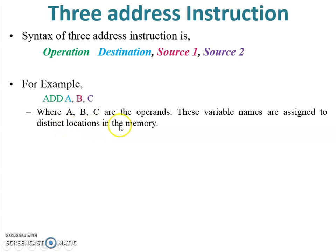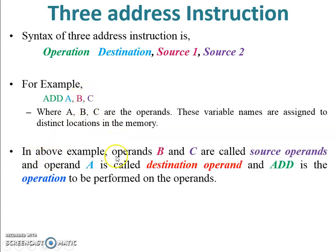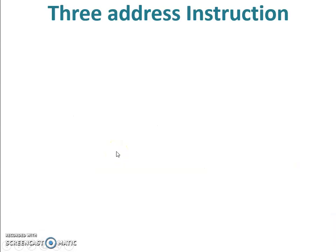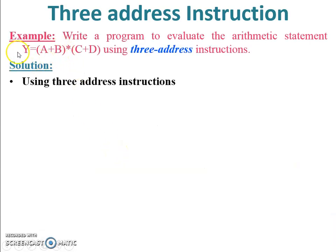A, B, and C are variable names assigned to distinct locations in the memory. Operands B and C are called source operands — data stored in B and C will be added, and the answer is stored in A. So A is called the destination address and ADD is the operation. If n bits are required to specify one memory address, then three n bits are required to specify three memory addresses, plus some bits for the operation code.